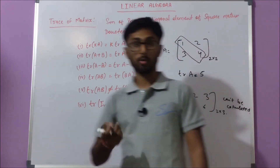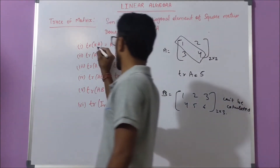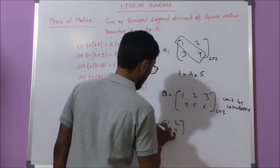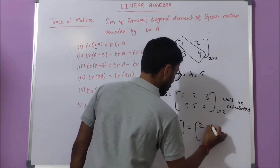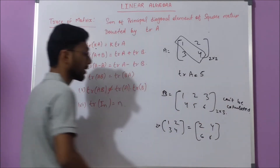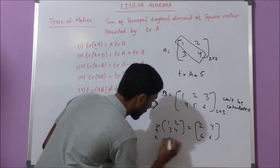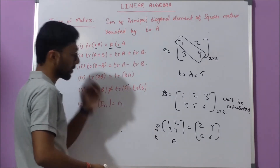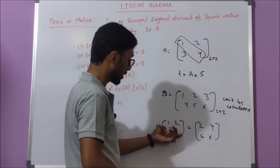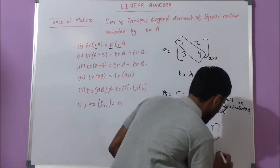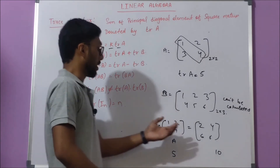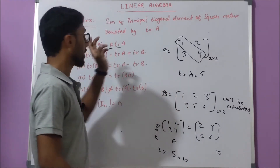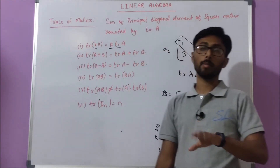For the property tr(kA) = k·tr(A), let's say matrix A = [1 2 / 3 4] and we multiply each element by k=2, giving kA = [2 4 / 6 8]. The trace of A is 5, and the trace of kA is 10. So trace of kA equals k multiplied by trace of A — both are equal, confirming the property.